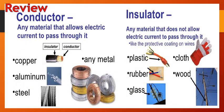We also tackled the difference between a conductor and insulator. Conductors are materials that allow electricity to pass through them, while insulators are materials that do not allow electric current to pass through them. Examples of conductors are copper, aluminum, steel, or any metal, while examples of insulators are plastic, rubber, glass, cloth, and wood.